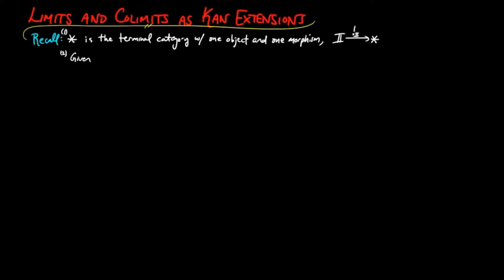And two, given an object a, the constant functor from I to a is a functor delta_a, which takes every object in I to a and every morphism to the identity on a. The assignment of an object to its constant functor then extends in the obvious way to the I-diagonal functor delta, from the category a to the functor category of natural transformations of functors from I to a.